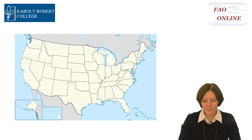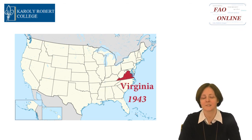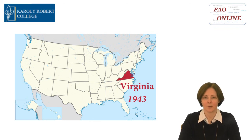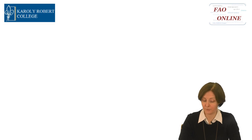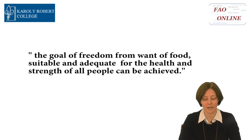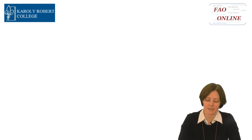It all started in Hot Springs, Virginia, USA in 1943, when the representatives of 44 governments had a meeting. The conference considered world problems of food and agriculture. The participants declared their belief that the goal of freedom from want of food, suitable and adequate for the health and strength of all people, can be achieved. So they decided to found an organization.